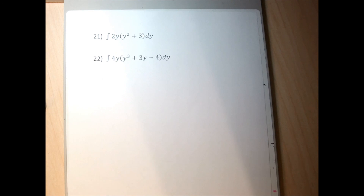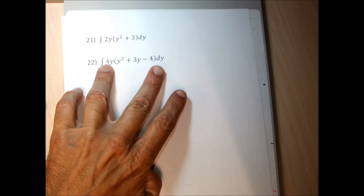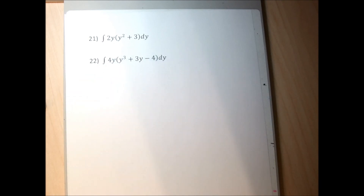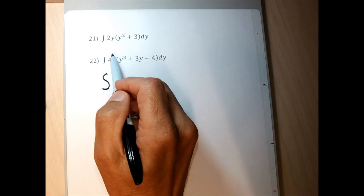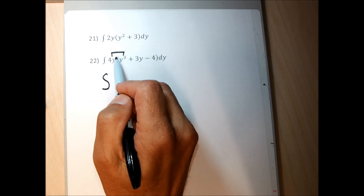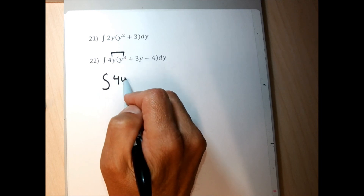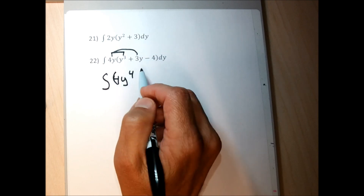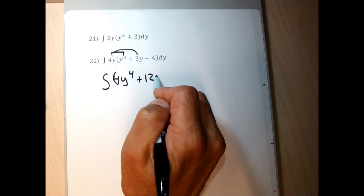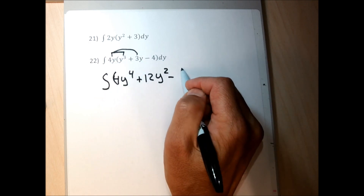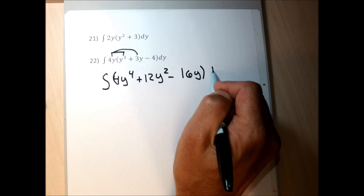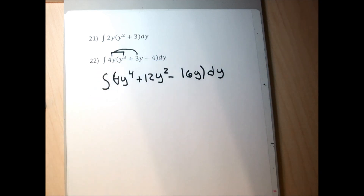The next few problems have multiplication between the integral sign and the dx. I need to get rid of that multiplication before finding the antiderivative. For example, if I have 4y times a polynomial in y, I distribute: 4y times y cubed is 4y to the fourth; 4y times 3y is 12y squared; 4y times negative 4 is minus 16y. If you leave multiplication, you'd need a reverse product rule, which is very complicated.